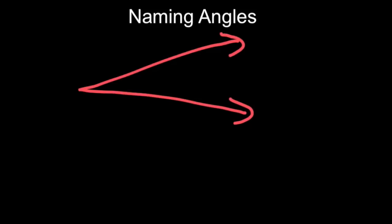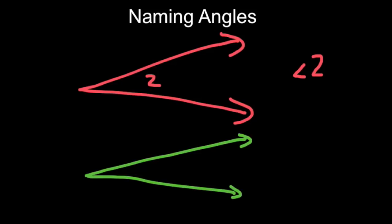Sometimes they will just put a number on the inside, and then this would be called angle 2. Sometimes they will put a letter, a capital letter, right at the vertex. In this case, it would be angle A.